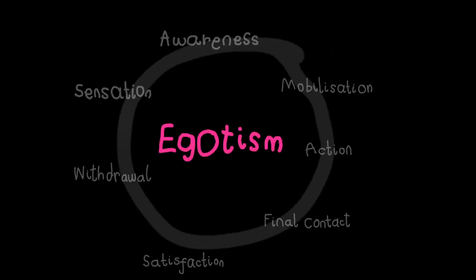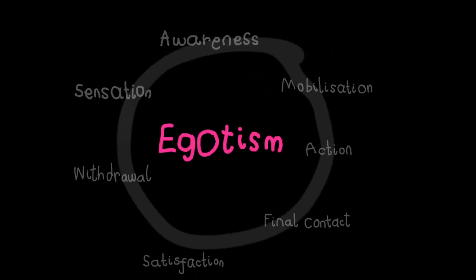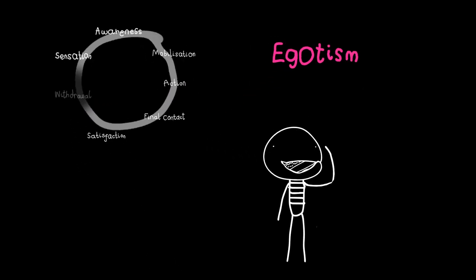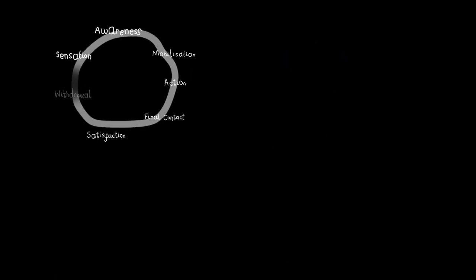Egotism. The final block. This might interrupt your satisfaction. For example, Bruce has eaten his burger and has satisfied his hunger, but immediately begins to tell himself that he shouldn't have eaten that and now he's going to get fed.